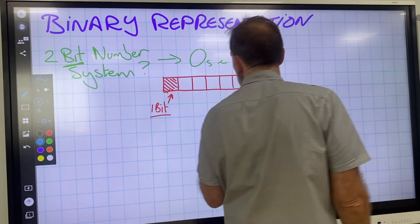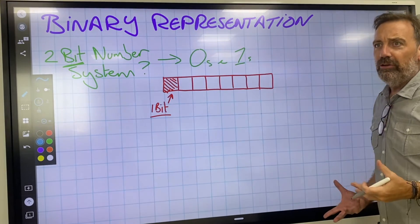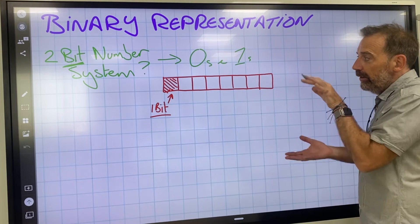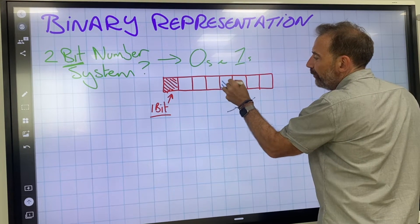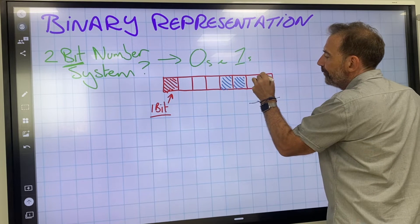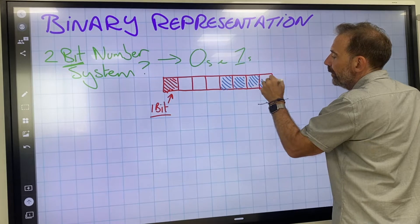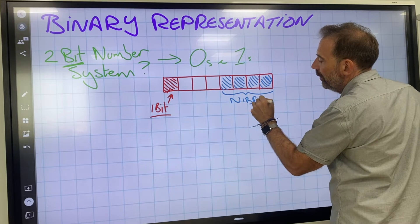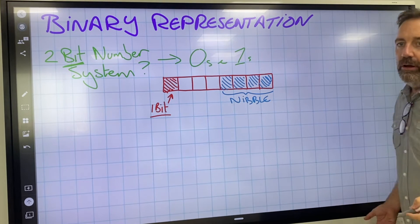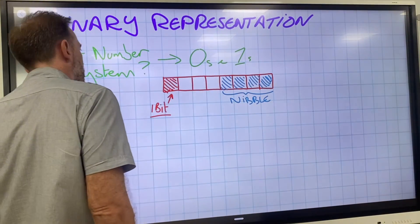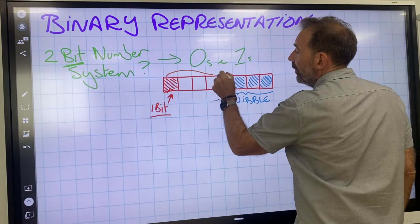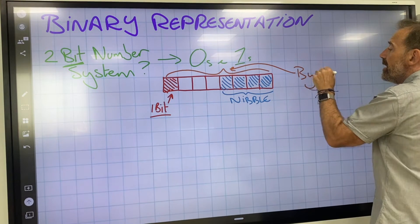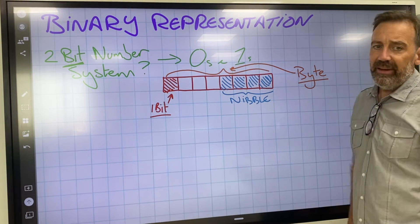Now, think of it like Goldilocks with the three beds, or Baby Shark. Baby Shark is 1 bit. Mummy Shark comes in — a little bit bigger — and she takes 4 of the bits. So Mummy Shark is what they call a nibble. But Daddy Shark comes along and he eats the entirety — all 8 bits. And this is what's known as a byte. So 8-bits is a byte.